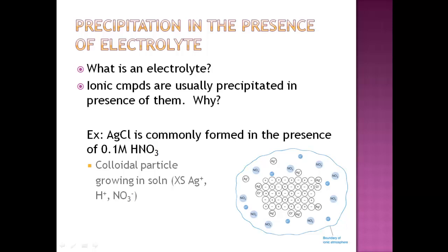A common example that you'll see is silver chloride precipitates in the presence of nitric acid which is a very common electrolyte, 0.1 molar nitric acid. What I'm showing you here is a colloidal particle. Do you remember what colloids are? Those are particles that are really small, about 1 to 500 nanometers that pass through most filters.